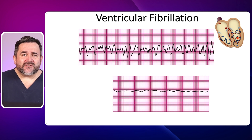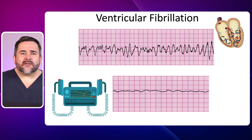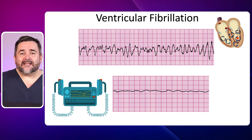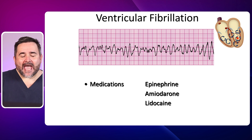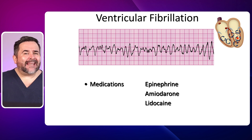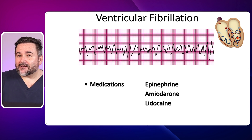Here we see VF, which is a cardiac arrest rhythm. VF is a result of chaotic electrical activity in the ventricles. The number one treatment for VF is defibrillation — defibrillation is your priority over medications. Don't forget to perform high quality CPR. The medications used for ventricular fibrillation include epinephrine, amiodarone, and lidocaine. Remember that epinephrine is always the first drug given in any cardiac arrest management, but in VF and pulseless ventricular tachycardia, the number one treatment is always defibrillation, then high quality CPR, then your medication.